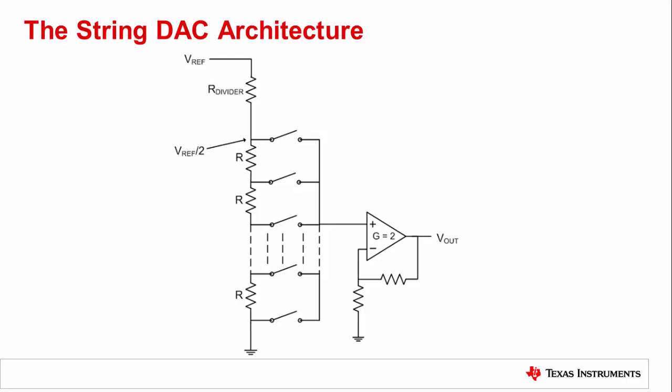The first architecture to consider is the string DAC, or sometimes called the Kelvin divider DAC. The string DAC is one of the simplest methods to realize a DAC, and is simply a collection of resistors in series with switching points or tap nodes between each of the resistors. When a digital input code is applied to the DAC, it is decoded and the output buffer switch moves to the appropriate position in the DAC's string.